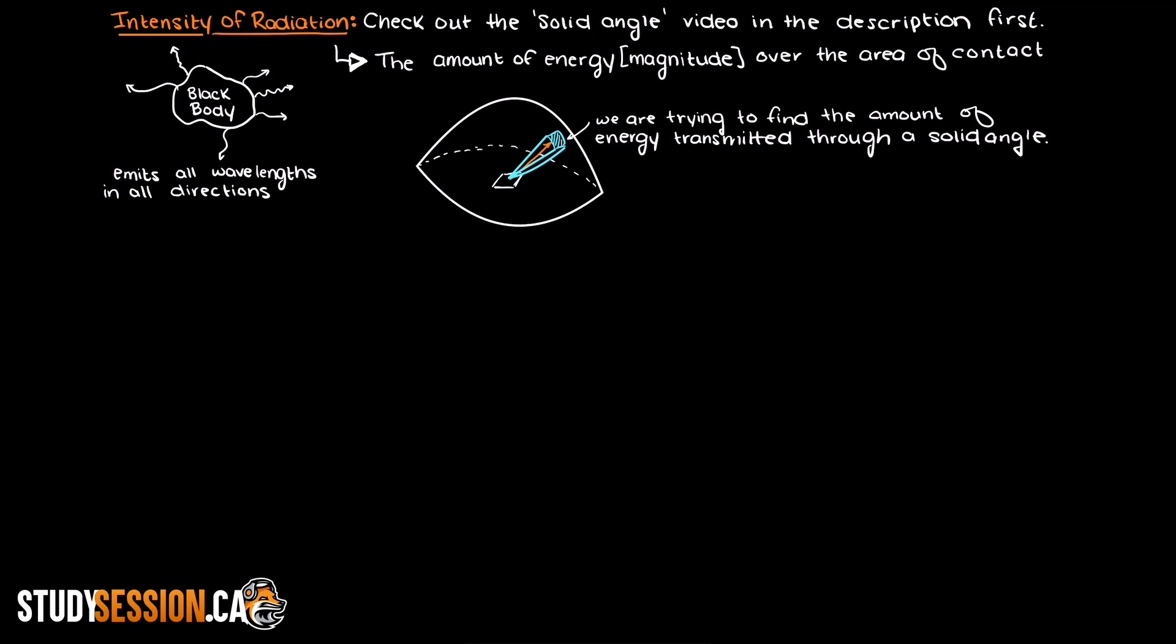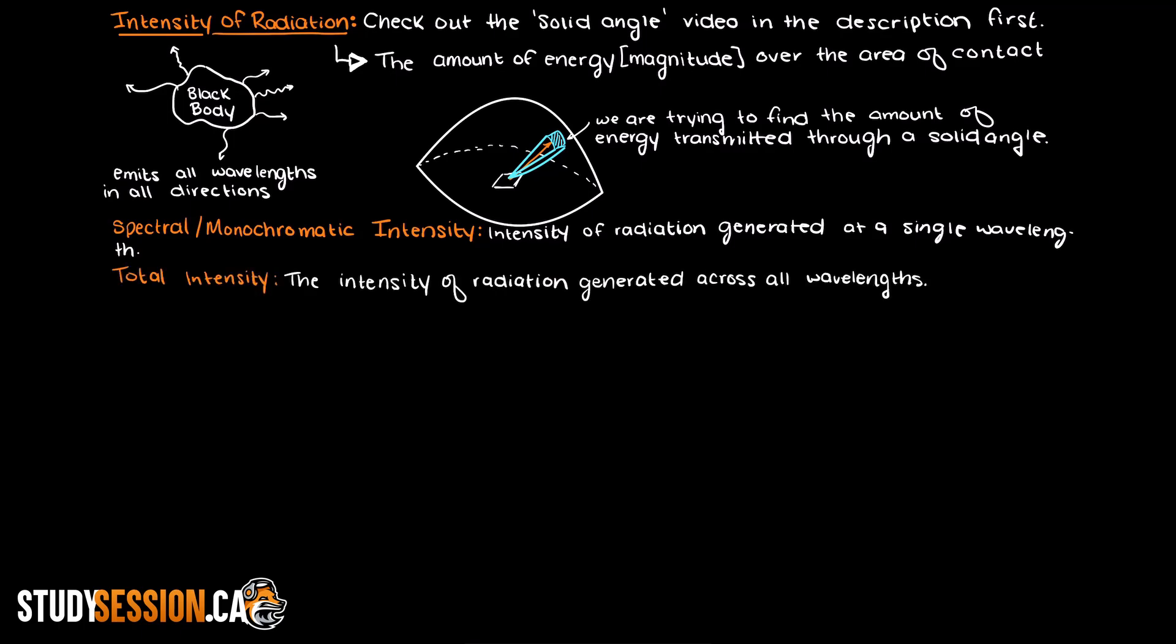we can find the monochromatic or spectral intensity, which is the intensity created by a single wavelength, or the total intensity of radiation, which is the total radiation of all wavelengths that are hitting a given surface.